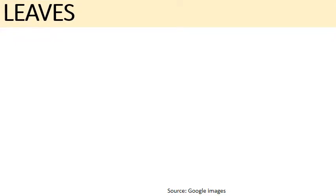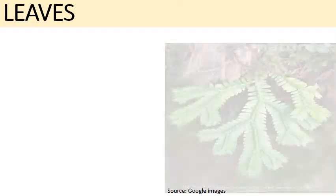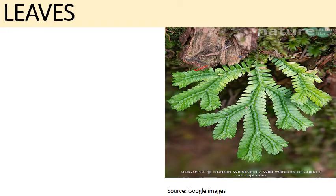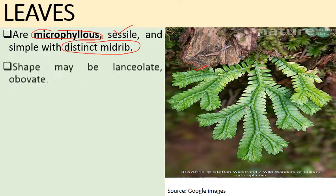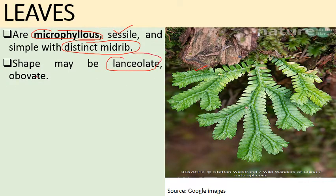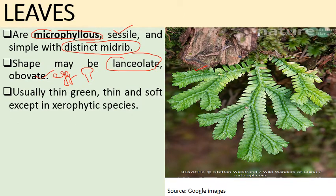Leaves in Selaginella are microphyllous — smaller in size — sessile without any petiole, and having a distinct midrib. The shape may be lanceolate to ovate. Species growing in shady, damp soil have thin, green, soft leaves, while xerophytic species have thick leaves covered with a thick cuticle.